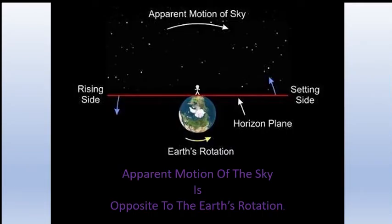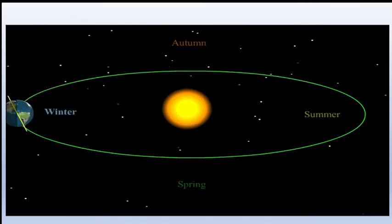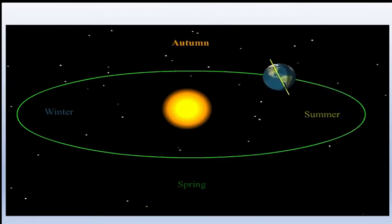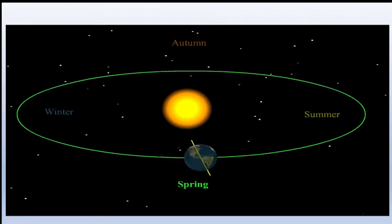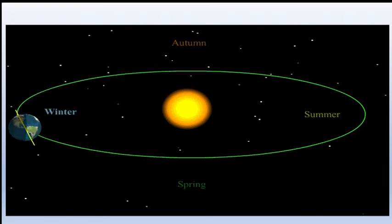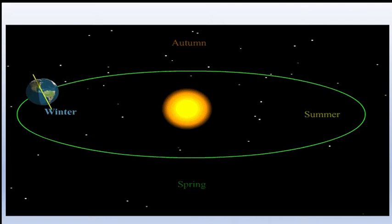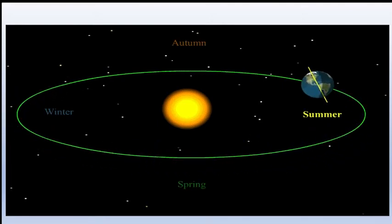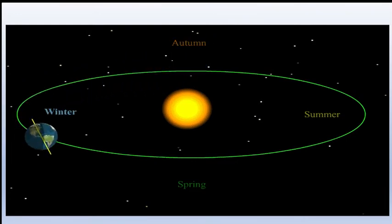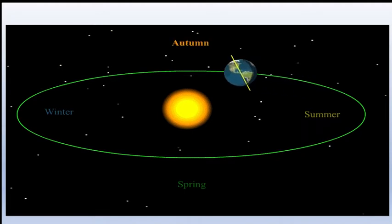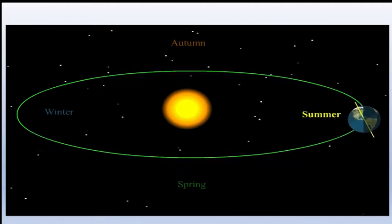The apparent motion of the sky is just opposite to Earth's rotation — objects rise in the east and set in the west. The second important motion is revolution, where one object goes around another. It is not simply Earth going around the sun — any object going around any other object is revolution. Stars rising and setting at different times are effects of this revolution.